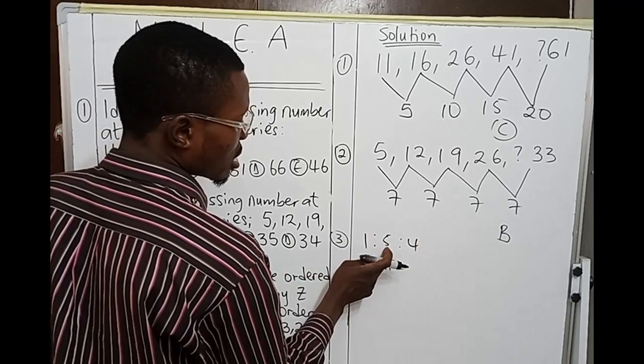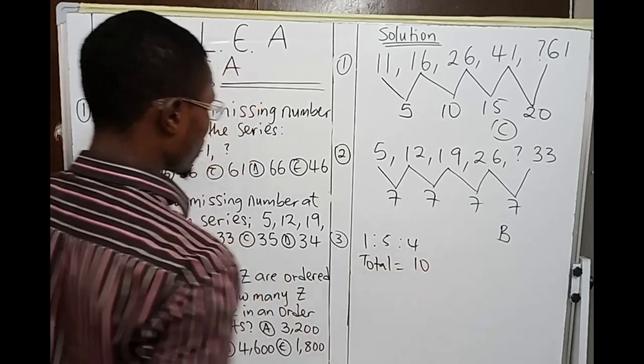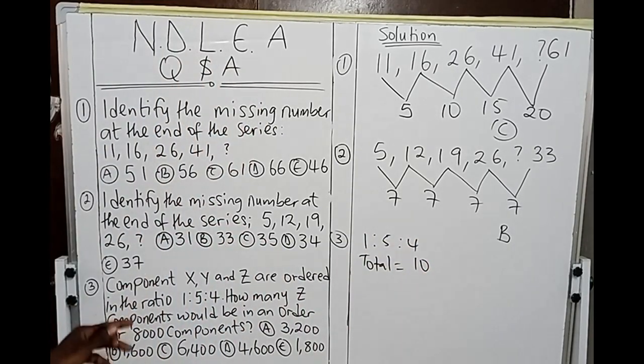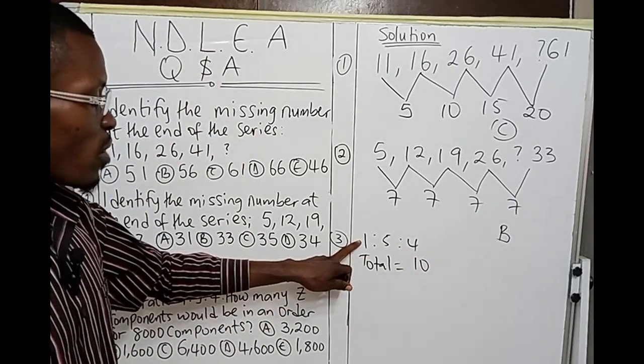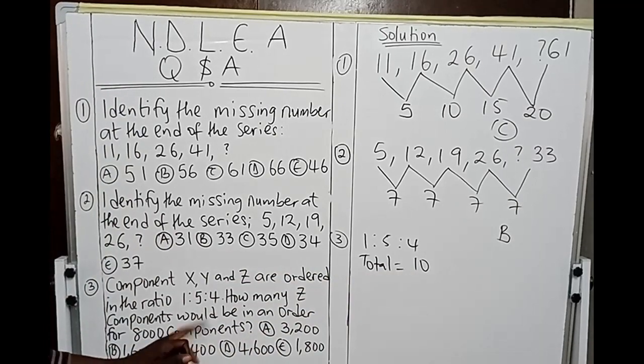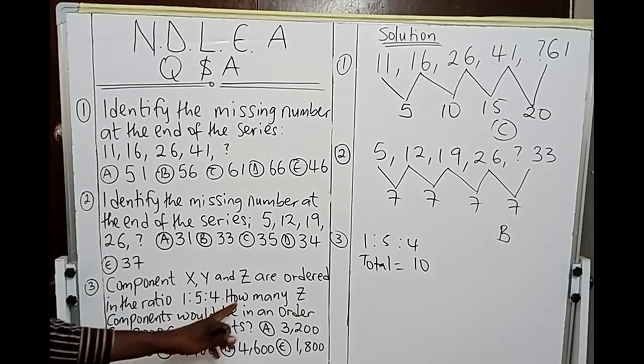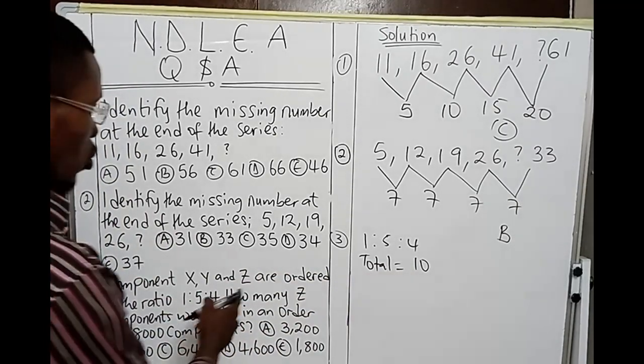For each component now, suppose you want to get for X, we're going to divide the ratio of X by total ratio then multiply by the total component. But the question asks us to get for Z component, so the ratio for Z is 4.